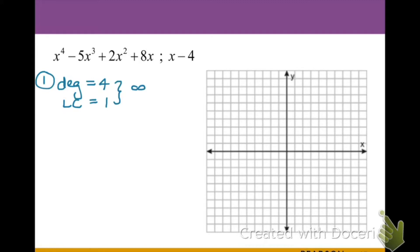If we think back to our leading coefficient test, we learned that if the degree is even then the directions have to be the same, and since we have a positive leading coefficient, this is going to be positive infinity, positive infinity — i.e., a rise, rise.